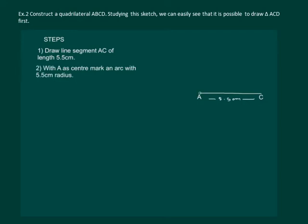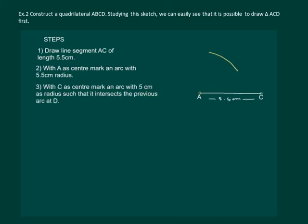Using a compass with A as center and with 5.5 centimeters radius, mark an arc. Now with C as center, mark an arc with radius 5 centimeters.